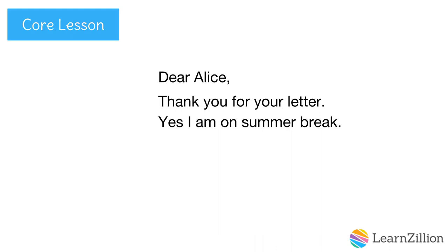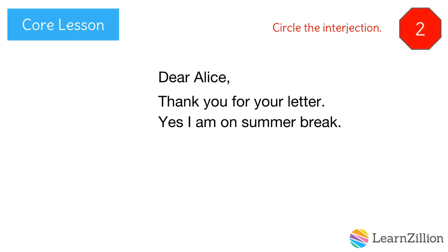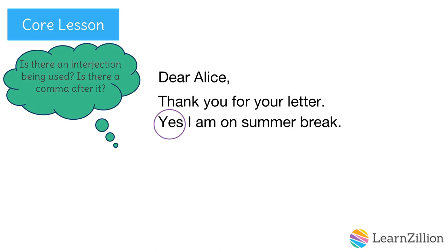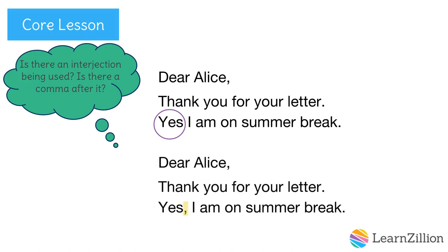Let's look at the beginning of the draft: Dear Alice, thank you for your letter. Yes, I am on summer break. Did you notice an interjection? Circle the interjection. You should have circled the interjection 'yes.' Remember, interjections are set off from the rest of the sentence by a comma. We need to add the comma after the opening interjection. Notice that 'I am on summer break' is a complete sentence. Now our sentence is all set.